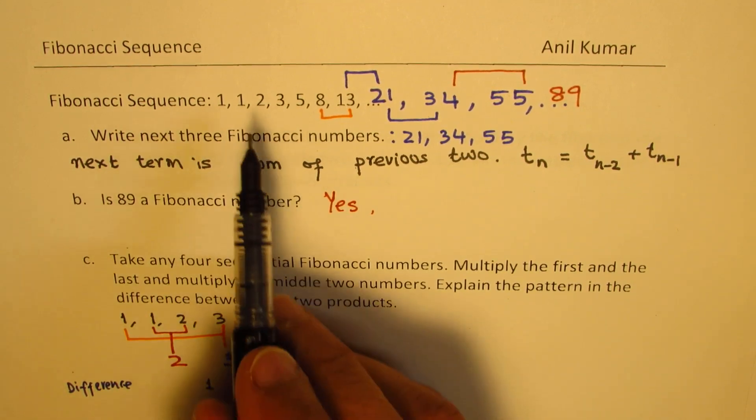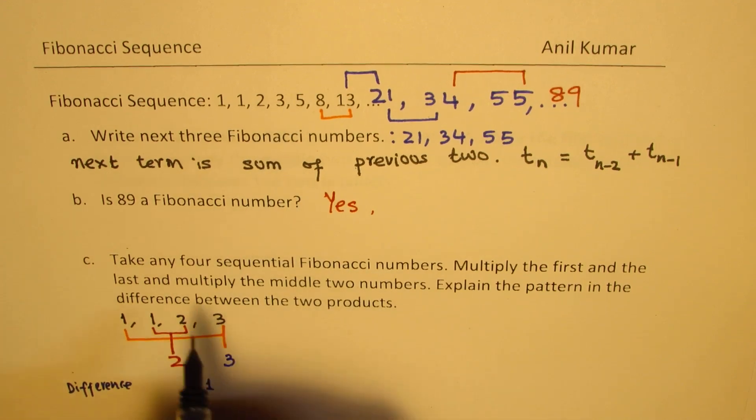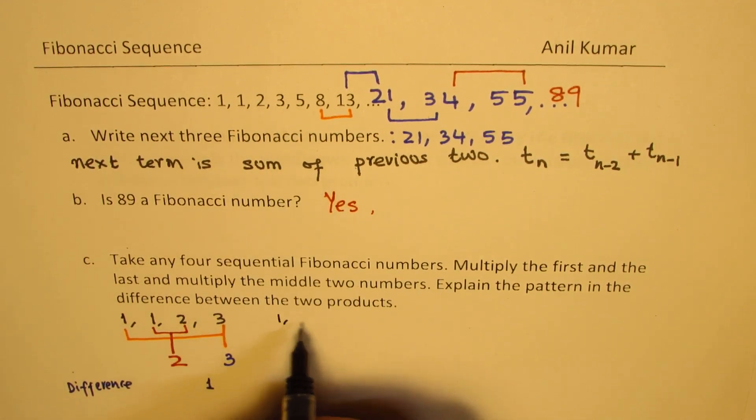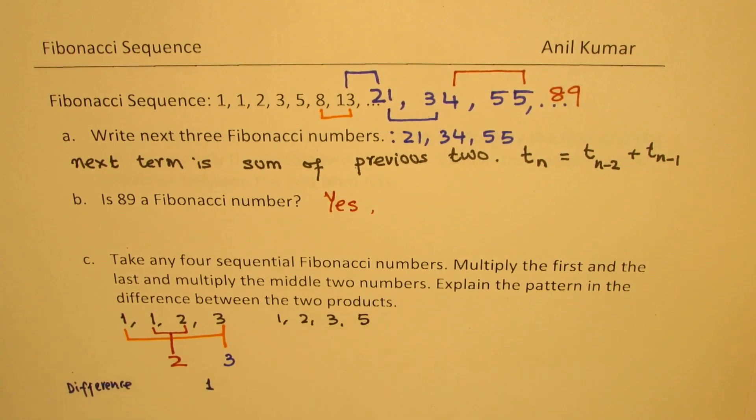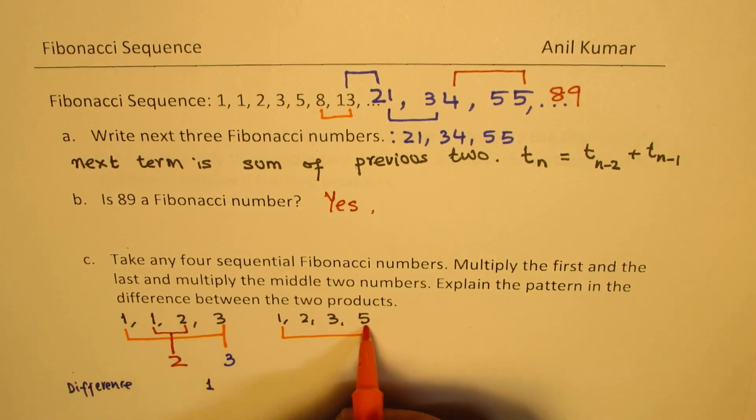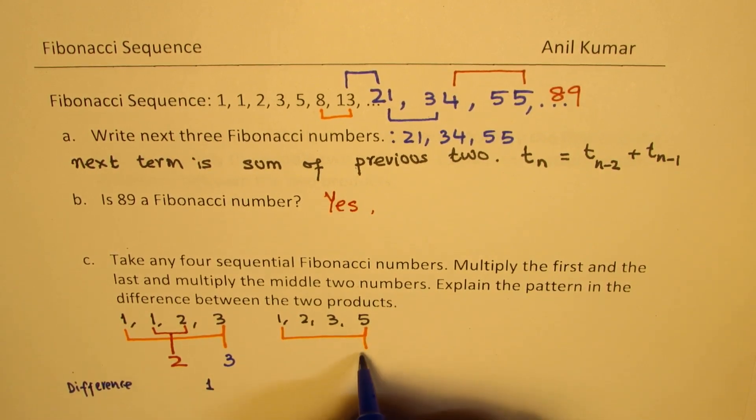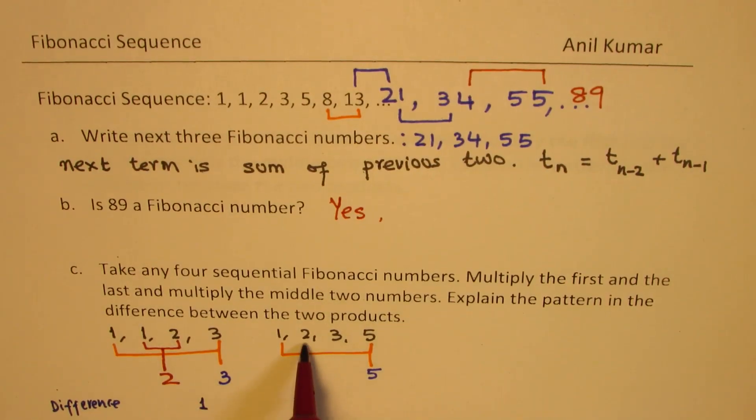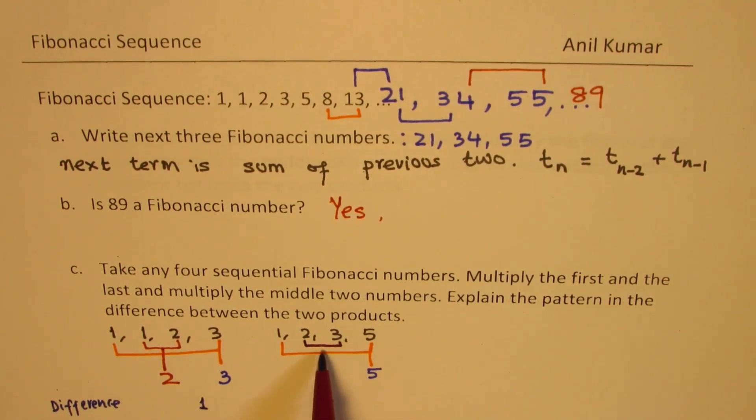Now let's continue. Let's take the next four numbers: 1, 2, 3, 5. If I multiply the outer two, I get 5. The product of 2 and 3 is 6. Again, the difference is indeed 1. But this time, 6 is greater than 5. Do you see that? The greater number is the product of the inside numbers. However, the difference is still 1.